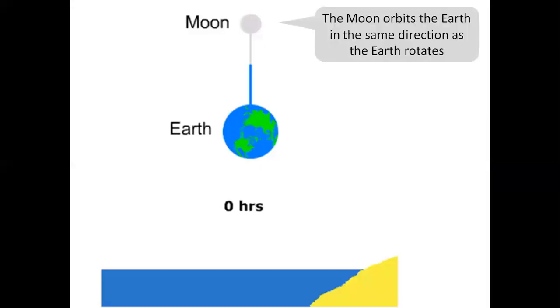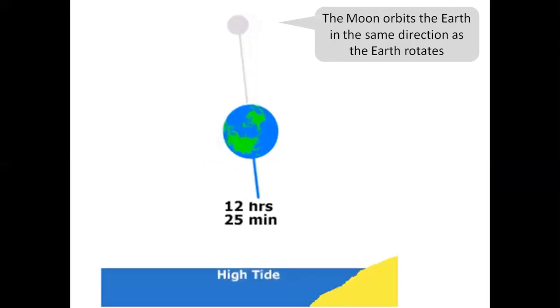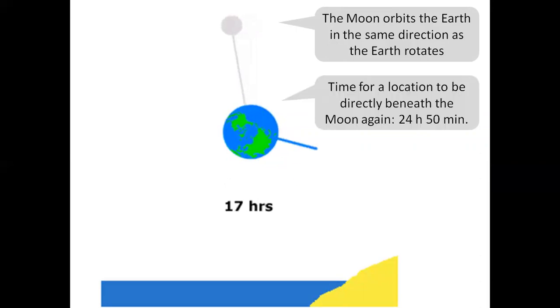The Moon orbits the Earth in the same direction as the Earth rotates. The time for a location to be directly beneath the Moon again is 24 hours and 50 minutes.